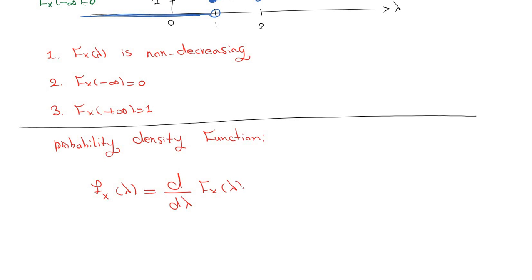Or if you want to calculate distribution function, you can use this formula: from minus infinity to lambda, f_X of mu d mu, where mu is again a dummy variable and x is a random variable.